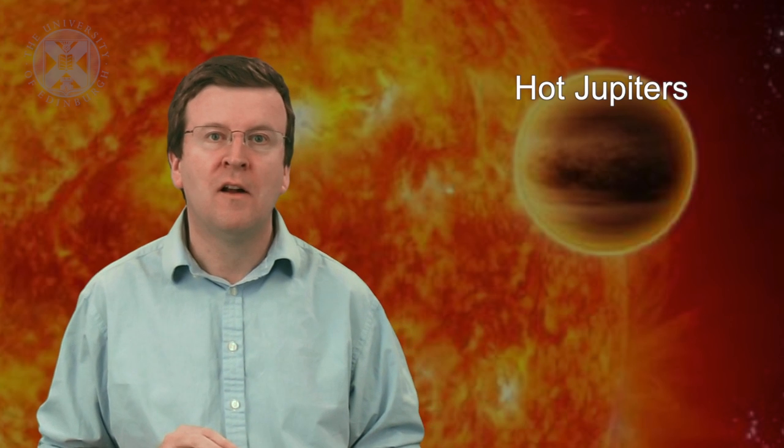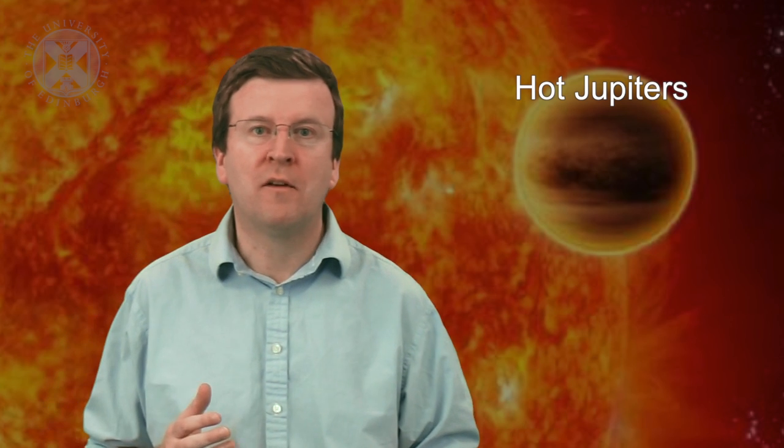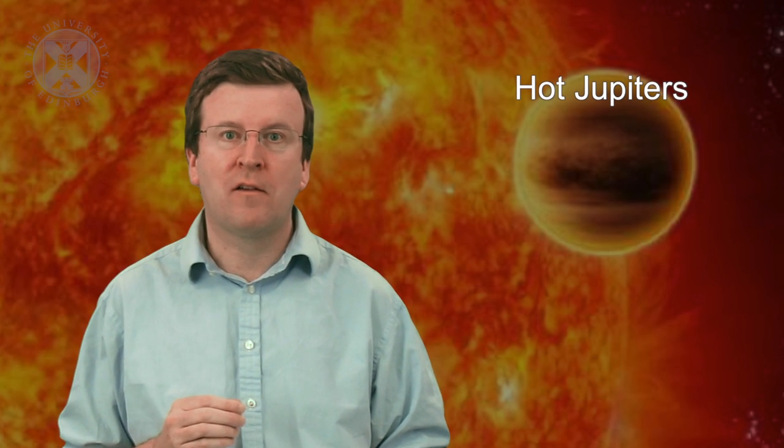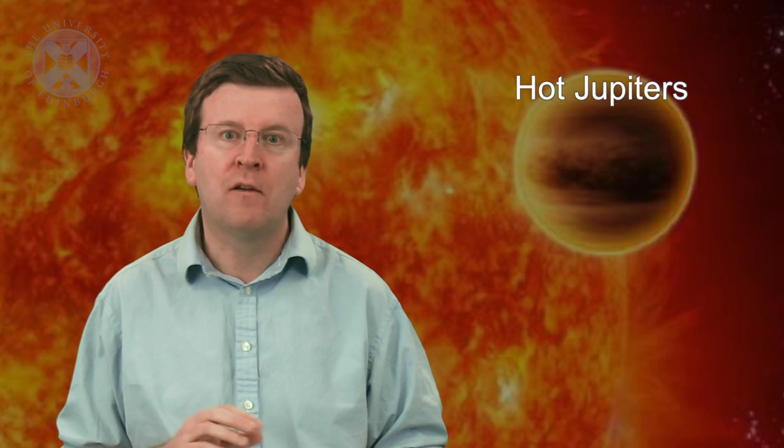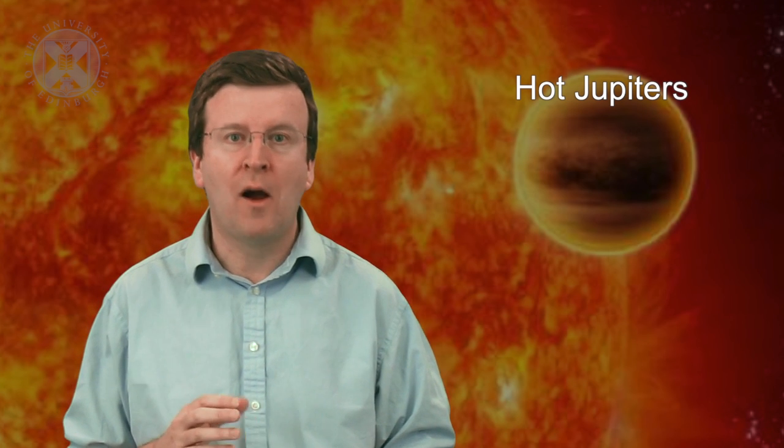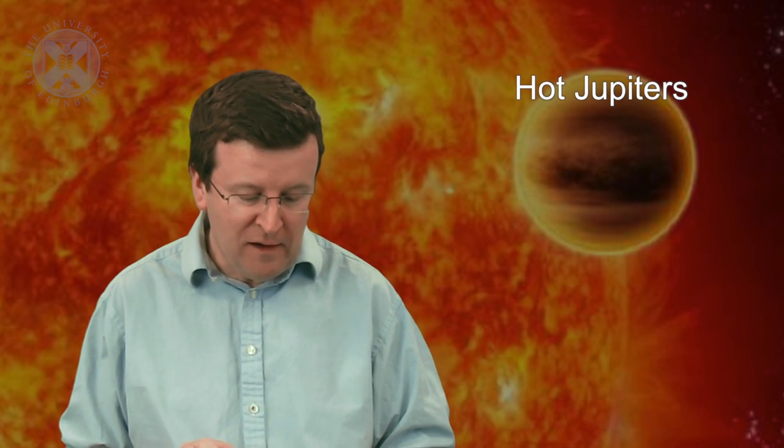When these hunts first began, the first types of planets to be observed were planets called hot Jupiters. These are planets the size of Jupiter but orbiting very close to their star. And the reason why these were first discovered is because they're large and they rotate around their star in short time periods, which made them quite easy to detect.